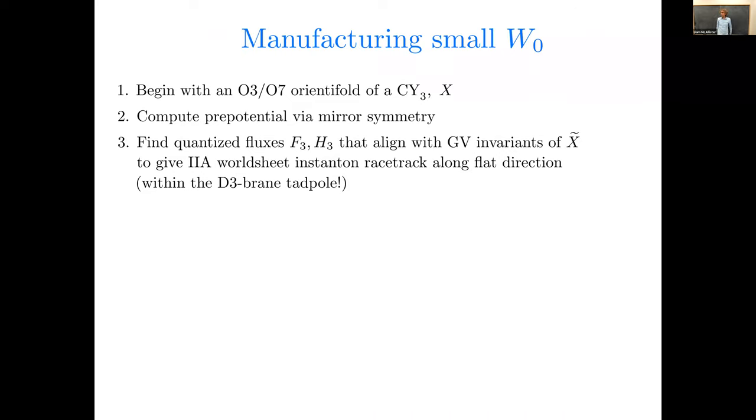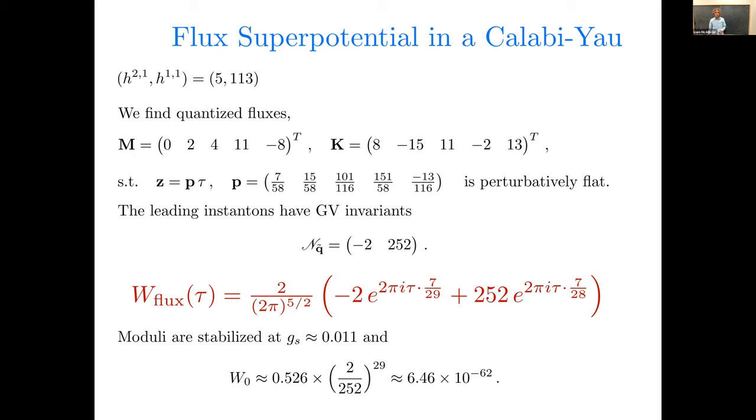Okay, now it's not going to work to just find one example and hope for the best in all the other requirements that we're going to impose. One has to be able to make lots of vacua with small w naught and then pick from them the ones where the Kähler moduli stabilization goes just right. So we need to be able to manufacture solutions with small w naught. So let's think about that a little more systematically. So you start with some 0307 orientifold of the Calabi-Yau 3-fold, and then compute the prepotential via mirror symmetry, and then find some quantized fluxes that align with the GV invariants of the mirror X tilde, so that the type 2a world sheet instanton racetrack along the flat direction stabilizes the flux superpotential at a small value.